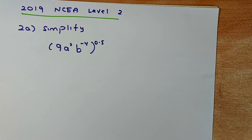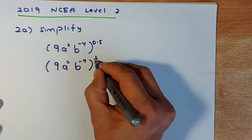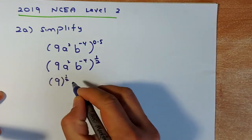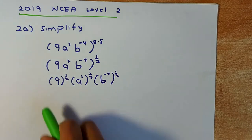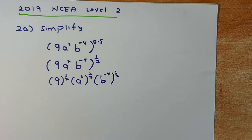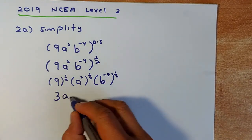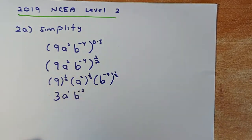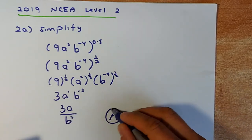Now we do two Achieve questions from NCEA Level 2. You have a bracket with a power of 0.5 — I convert 0.5 to a half. So for 9a squared b to the minus 4, all to the power of a half, I break each part into a separate power: 9 to the half, a squared to the half, and b to the minus 4 to the half. Using Law 3, multiply the powers. 9 to the half is the square root of 9, which is 3. 2 times a half gives a to the power of 1, so a remains as a. And b to the minus 4 times a half gives b to the minus 2. Since you cannot leave a negative power in your answer, b to the minus 2 becomes 1 over b squared, giving the final answer 3a over b squared. That is an Achieve in Level 2.